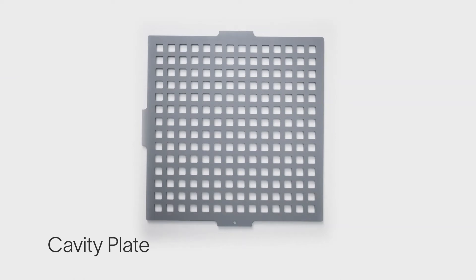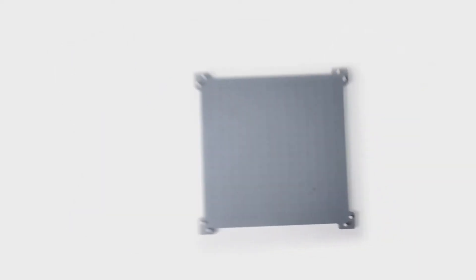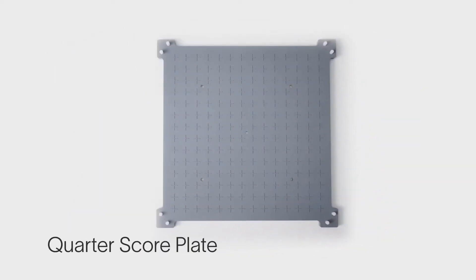each holding a volume of 1 milliliter. Next is the quarter scored plate. The quarter markings make this plate easy to identify.